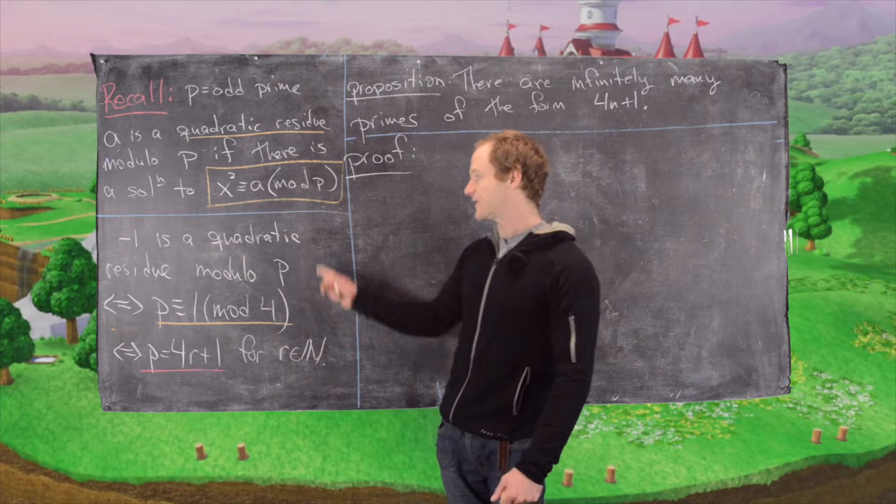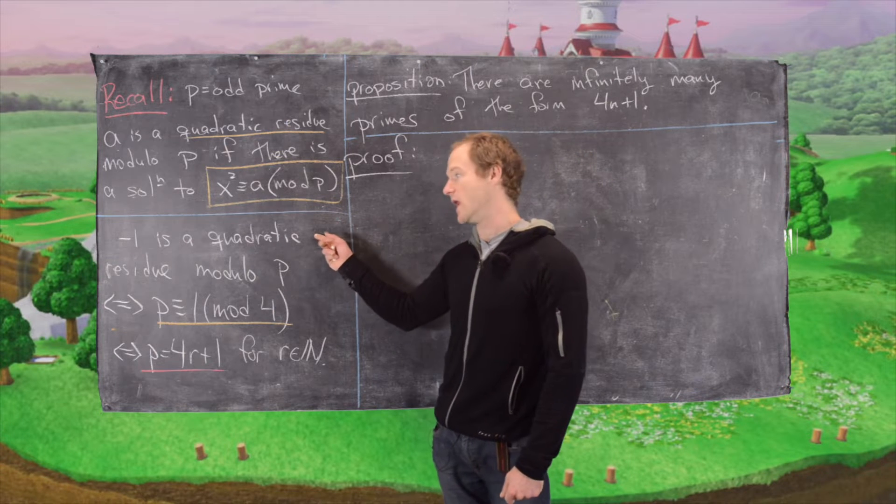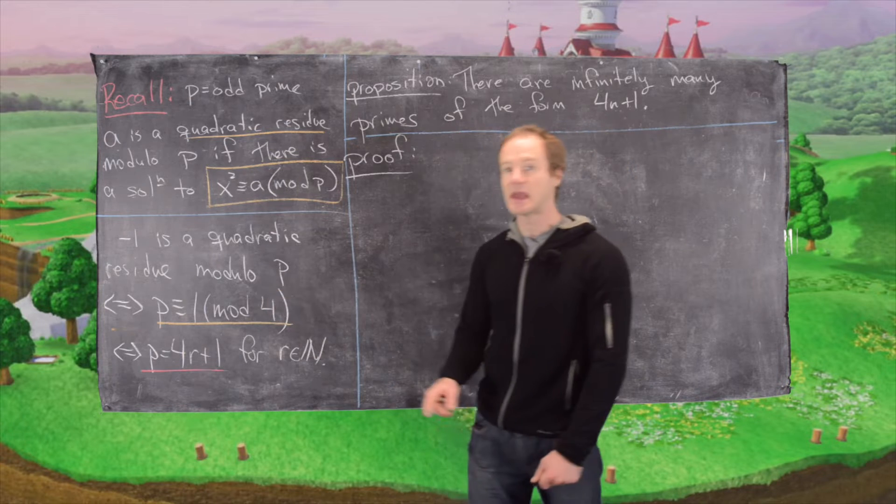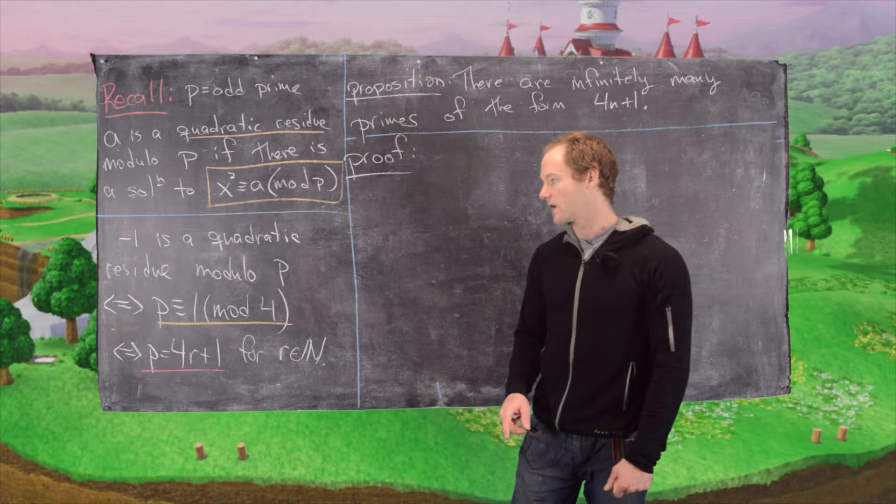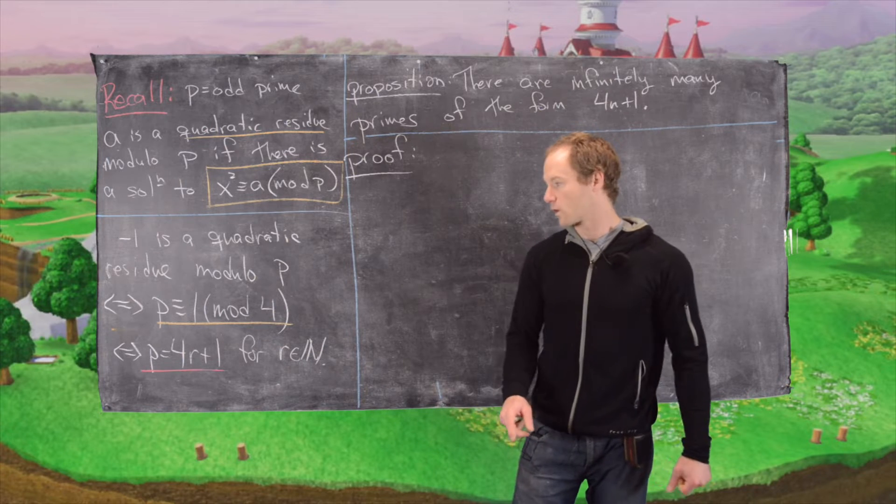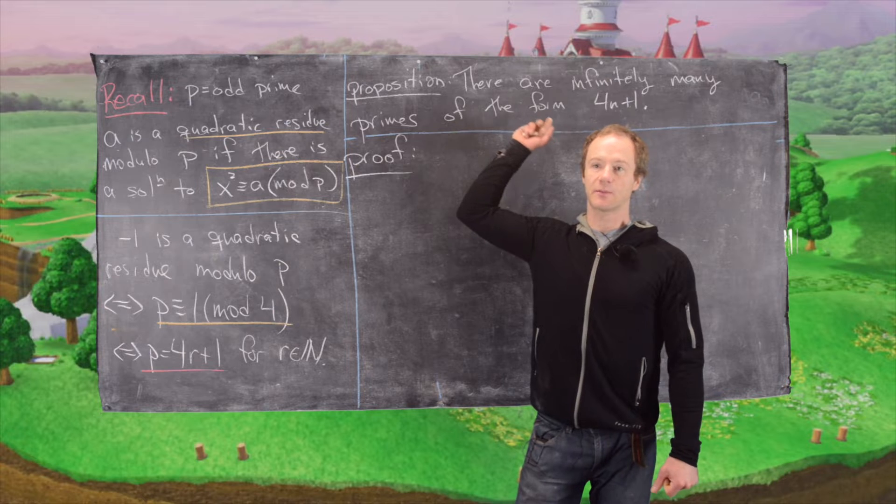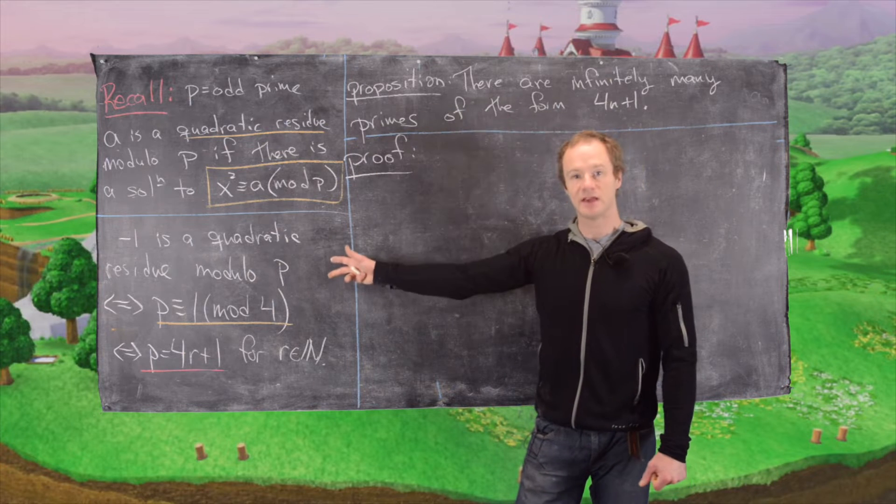And then the next fact we need is that negative 1 is a quadratic residue modulo p if and only if p is congruent to 1 mod 4. In other words, p is of the form 4r plus 1 for some natural number r. Obviously we're looking at primes of this form so we'll probably make use of this second thing.